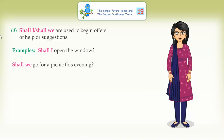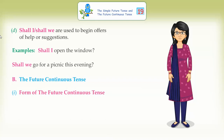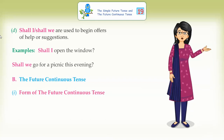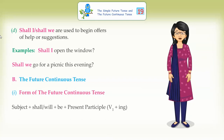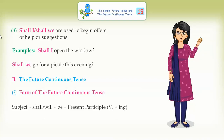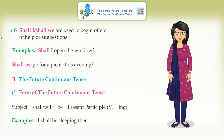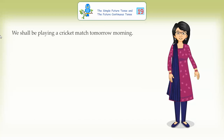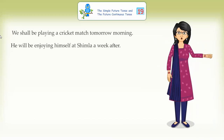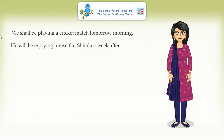The Future Continuous Tense. Form: Subject plus shall/will plus be plus present participle. Examples: I shall be sleeping then. We shall be playing a cricket match tomorrow morning. He will be enjoying himself at Shimla a week after. They will be visiting us next week.